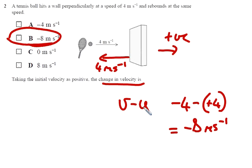V minus U is the change of velocity. The original velocity is the way we take as positive. So V coming back is going to be minus 4 and we're subtracting the original plus 4 which gives us minus 8. So B is the correct answer.